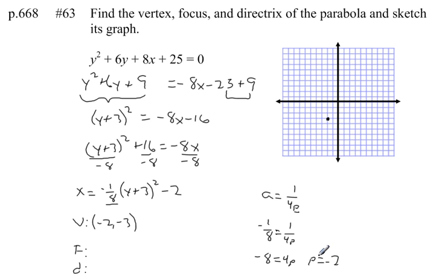That means our focus is 2 units to the left of our vertex. So here's our focus. And that point there is negative 4 comma negative 3.